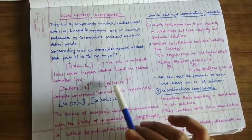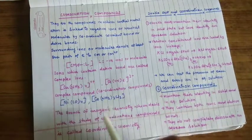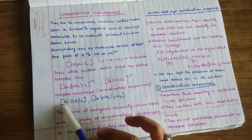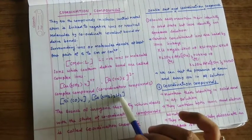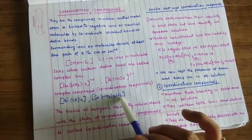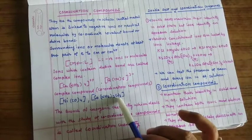For example tetra amine copper second ion, hexacyanoferrate third ion, tetracarbonyl nickel, triamine trichlorido cobalt third. So all these are coordination compounds.